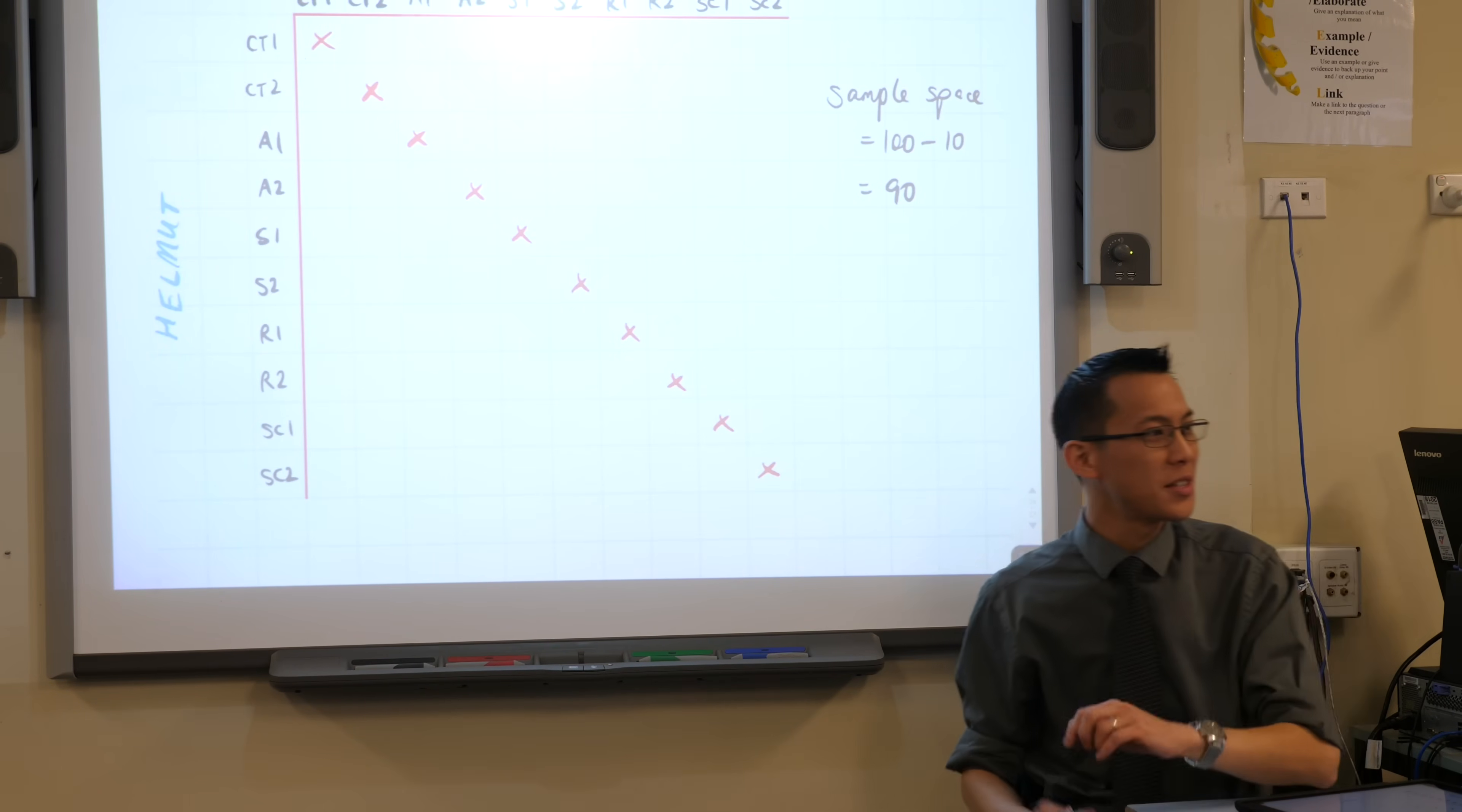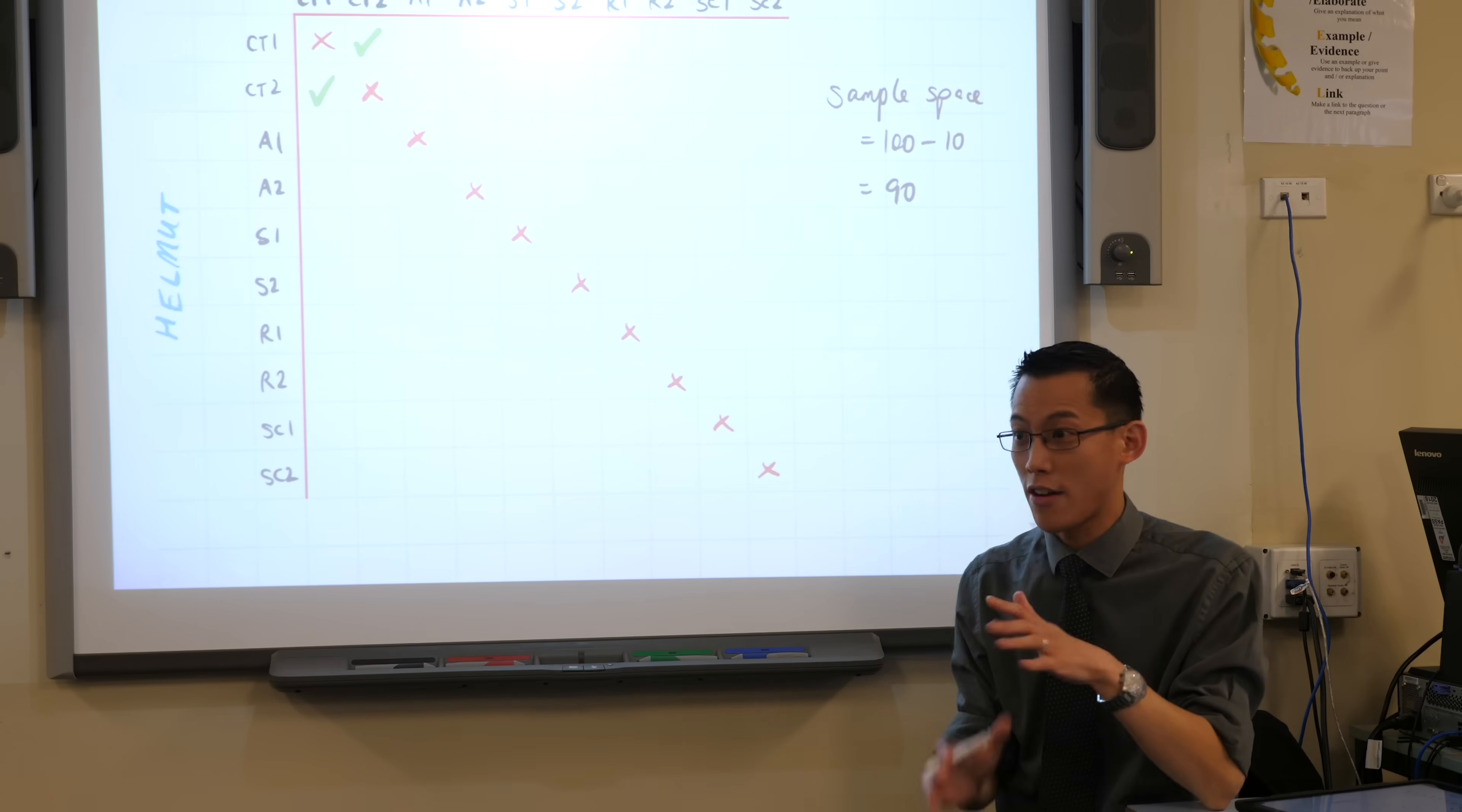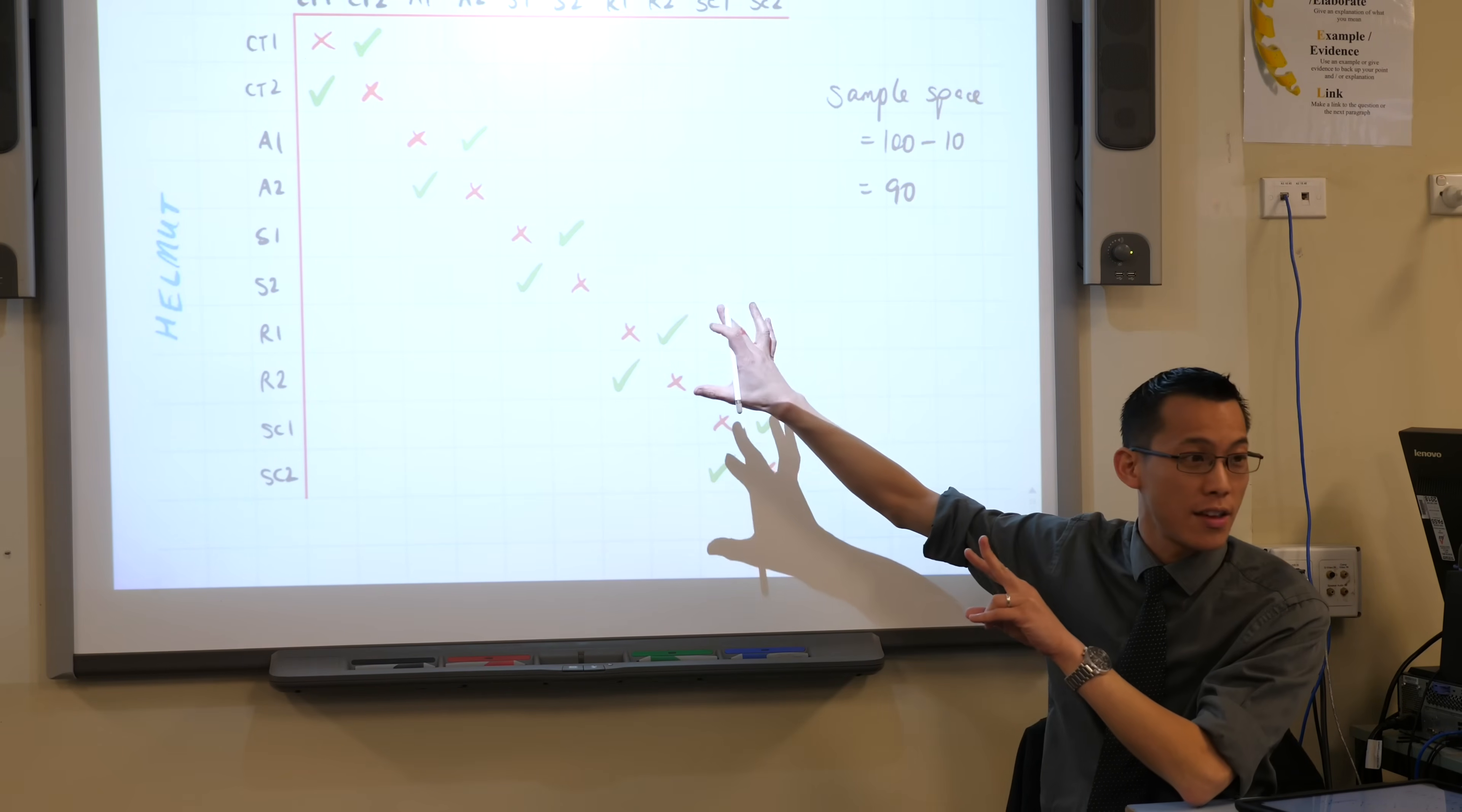All right, now that I know what the sample space is, all that remains is to work out the favorable outcomes. For example, where would it be where they both get a Christmas tree card? There's the first Christmas tree, CT1, for Helmut, and the second one for Harry. But of course, there's another way I can do that. They could swap cards, because it doesn't matter which one's which. So those are both good. And I can keep on going. Those are the spots where they both get angel cards. Here's where they both get snow cards, they both get reindeer cards, they both get Santa Claus cards. Are you happy with the way that I have reduced the sample space to be the actual options, and identified the favorable outcomes?